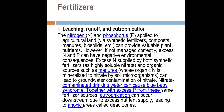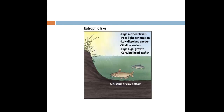These nutrients can provide vulnerable plant nutrients leading to eutrophication. In a eutrophic lake, the bottom may be silt, sand, or clay. Characteristics include high nutrient levels, poor light penetration, low dissolved oxygen, shallow water, and high algae growth, with fish species such as carp, bullhead, and catfish likely to develop.